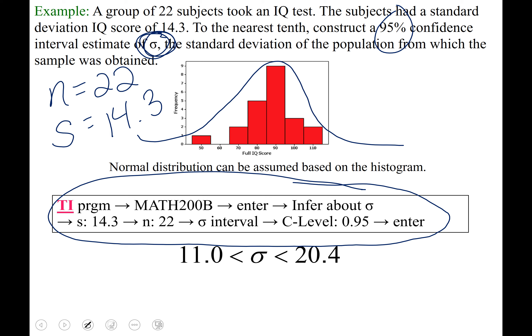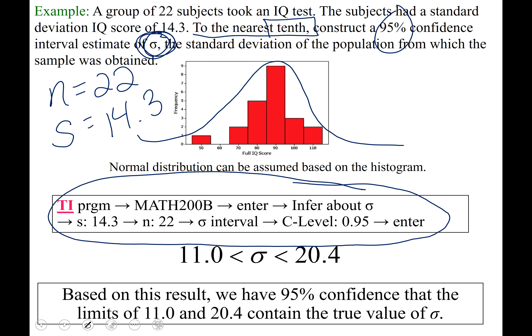Rounding to the nearest tenth, we get 11.0 and 20.4. Based on this result, we have 95% confidence that the limits of 11.0 and 20.4 contain the true value of sigma — the true standard deviation of IQ scores. A standard deviation of somewhere between 11 and 20 IQ points sounds about right.